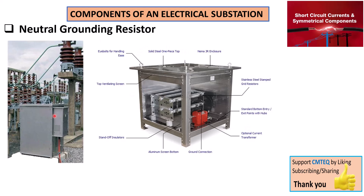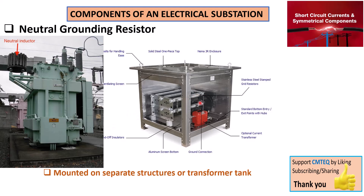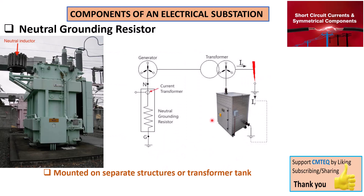As this device is mounted on top of a transformer or somewhere near a transformer, its main purpose is to provide the shortest path for the current to flow to the ground. Electrical current is always trying to return to the source where it comes from by choosing the path with the least resistance. So by providing an earth grounding resistor through the transformer neutral point, we are basically providing that path for the current to flow.